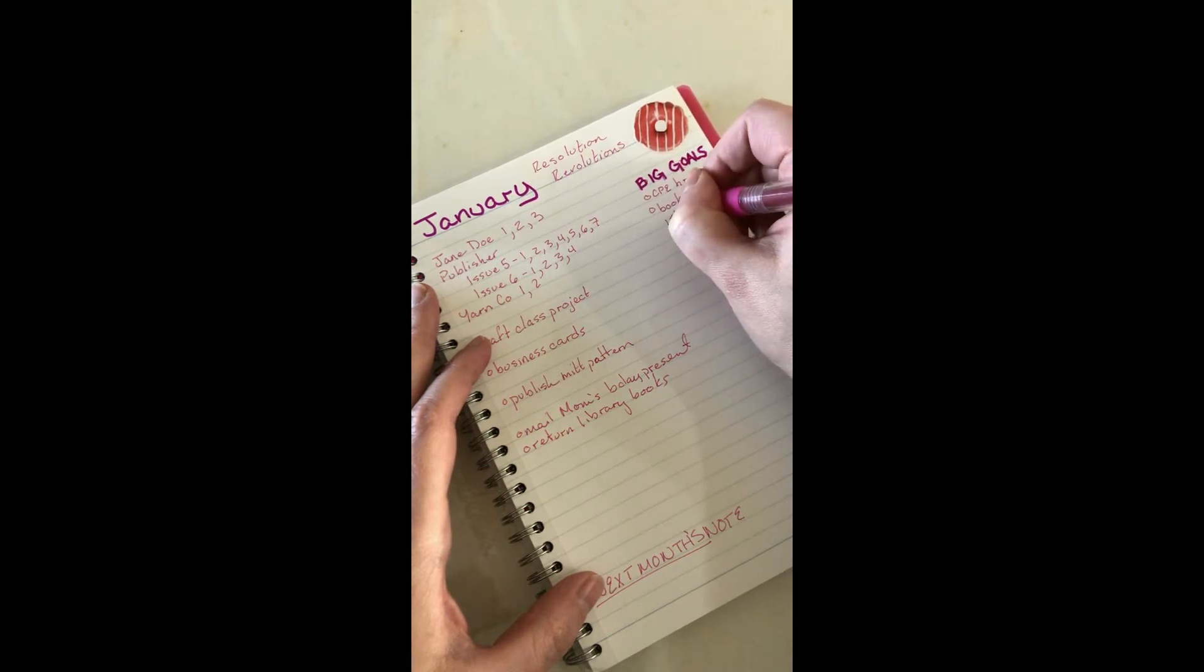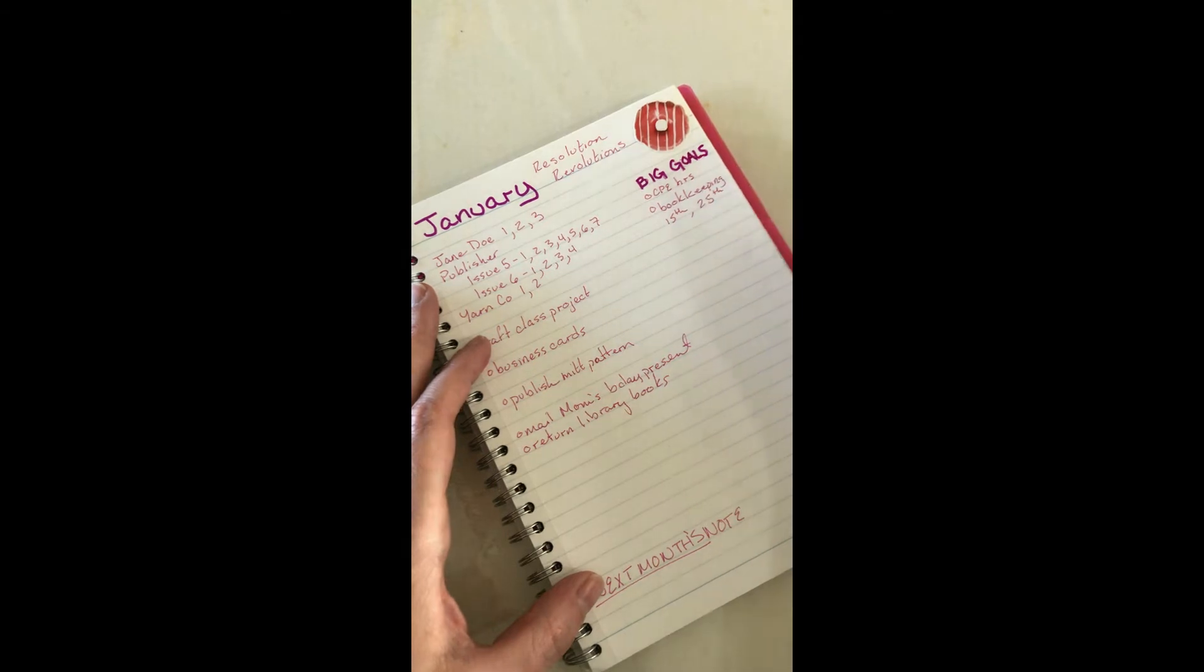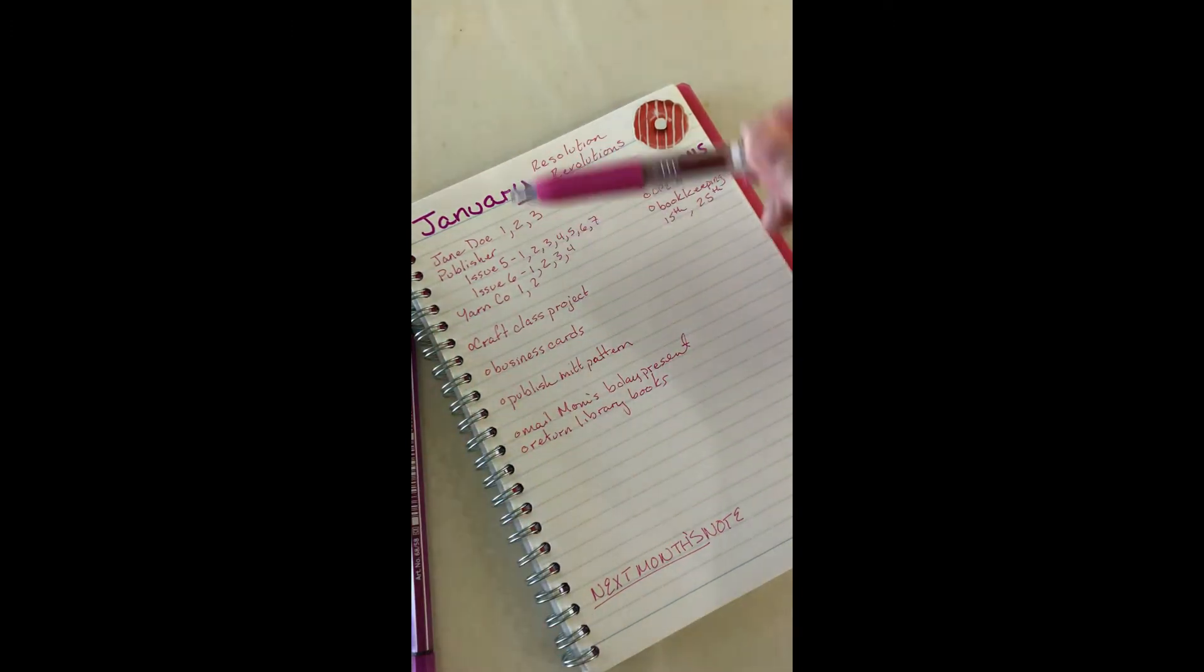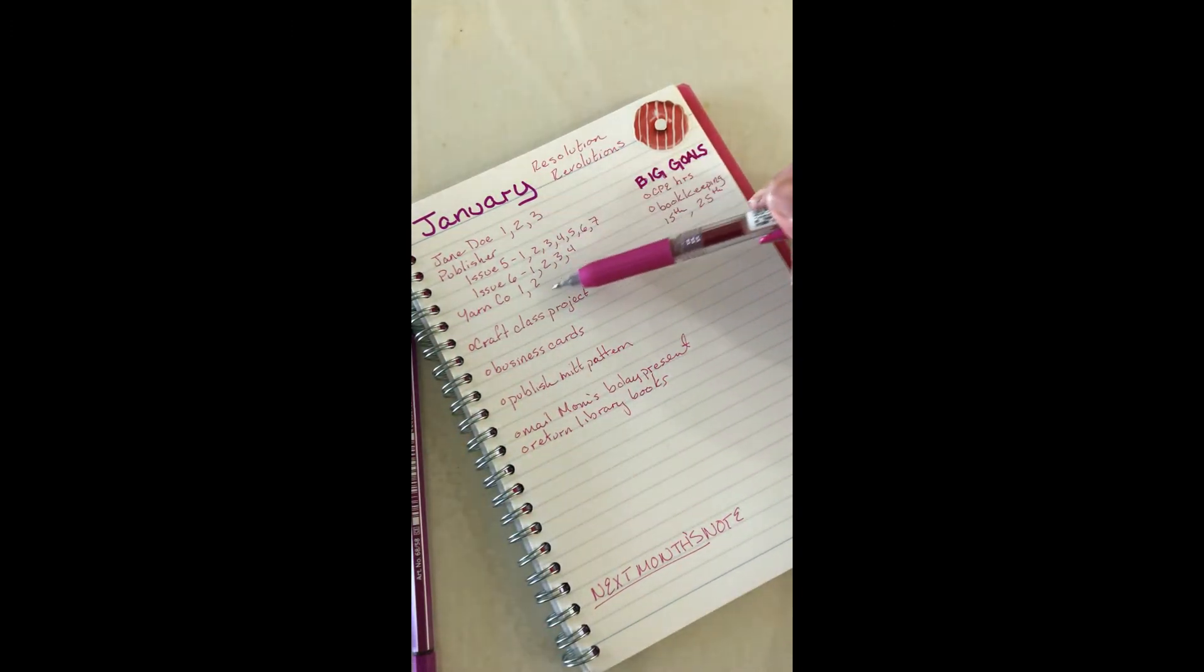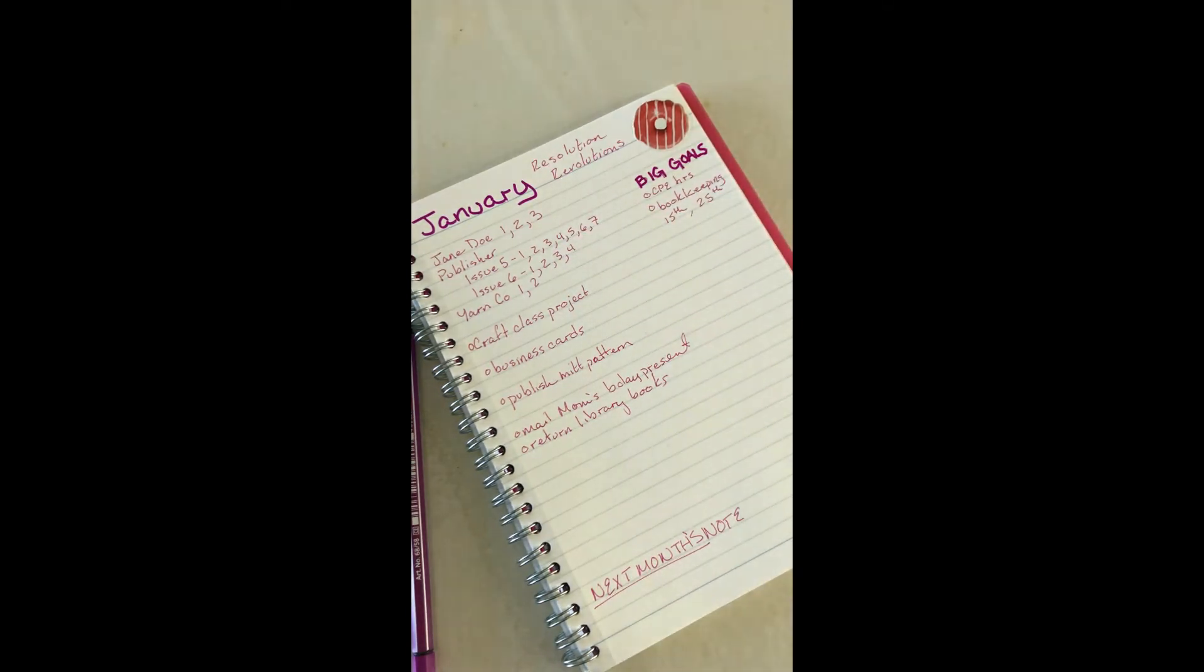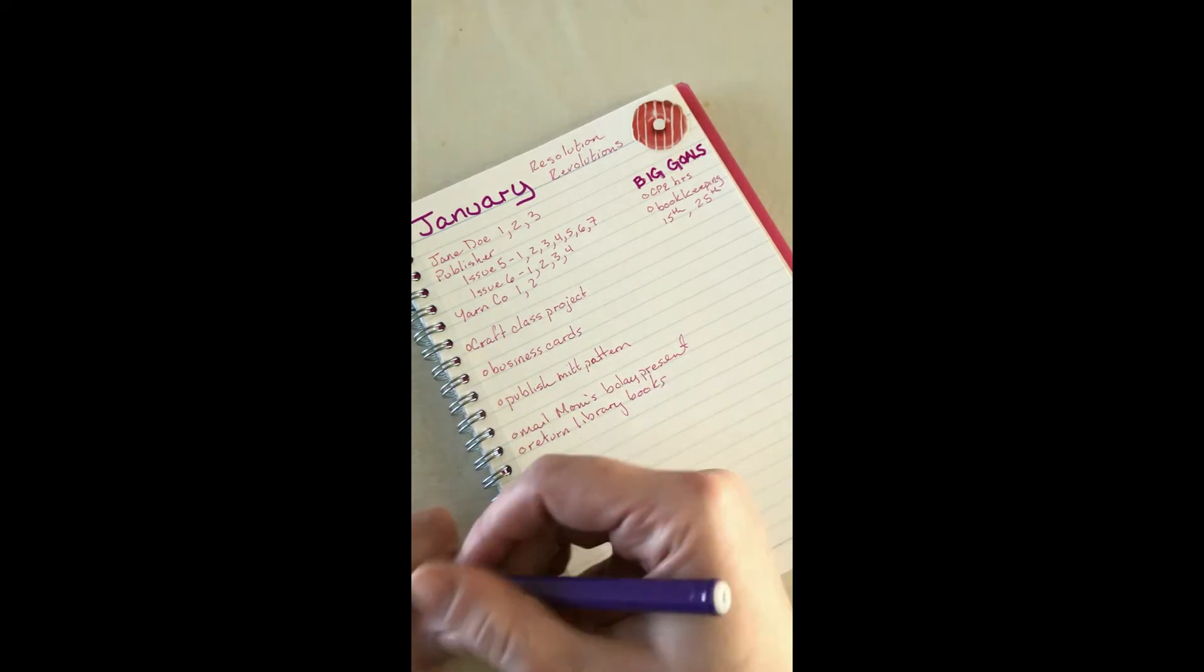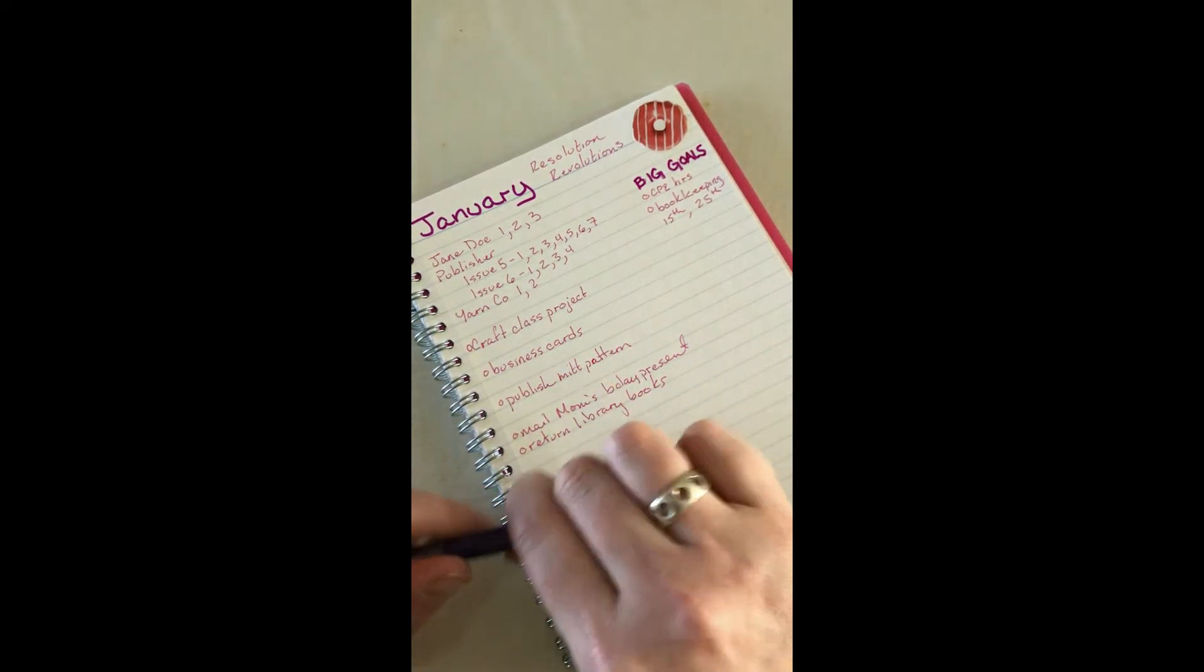Those are like my big overreaching things that like hey don't forget me, because it's very easy when you have all this stuff for other people to kind of forget the things that are maybe important to you as well. This is my monthly page. I add to it over the course of the month, so as things pop up I come down.